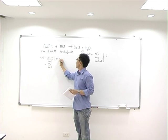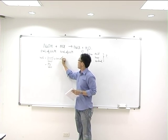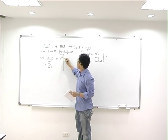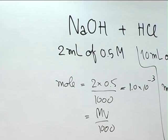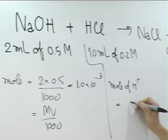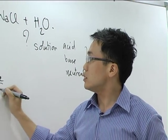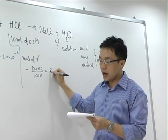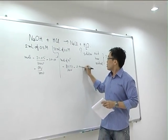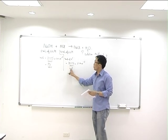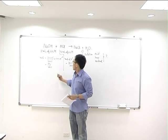For moles of proton, we get 10 times 0.2 over a thousand, which also gives 2 times 10 power of minus 3. When these two react together, you can see from the reaction that it's a 1 to 1 ratio.